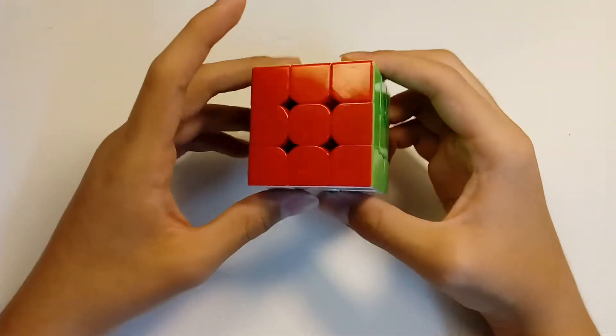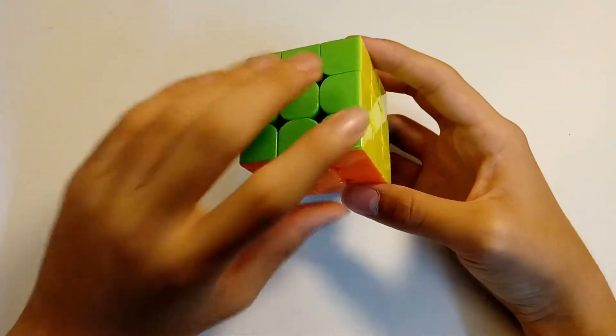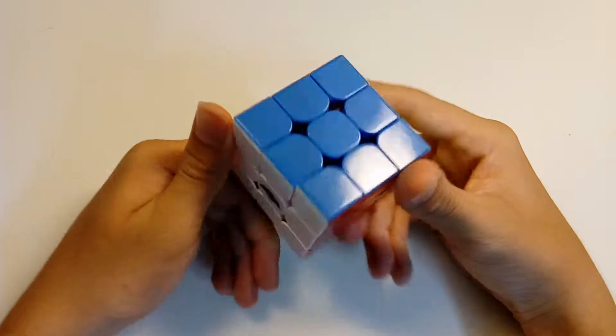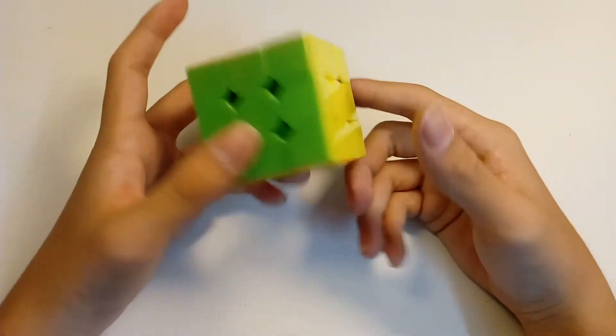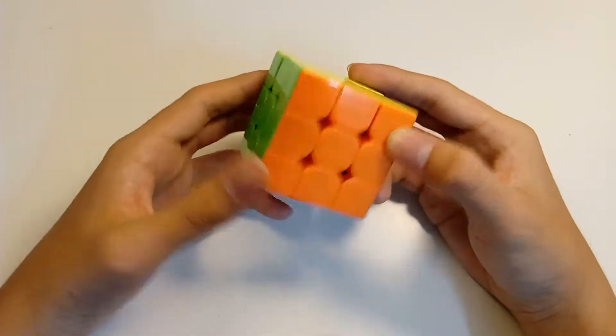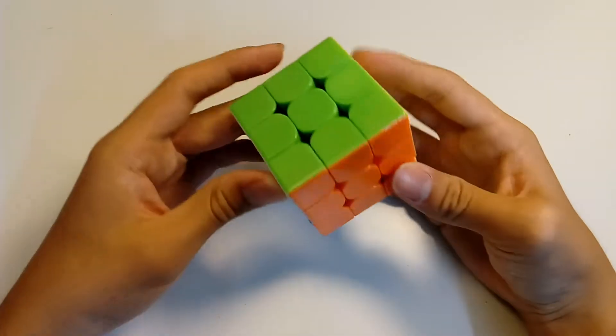But the problem is that you can't change the shades of the stickerless. So like this cube, I don't really fancy the shades on this cube because you see, this part here is really bright, and then the blue and the red is really dark. So I like my shades to be full bright. This is I believe half bright or a mix of both full bright and half bright.